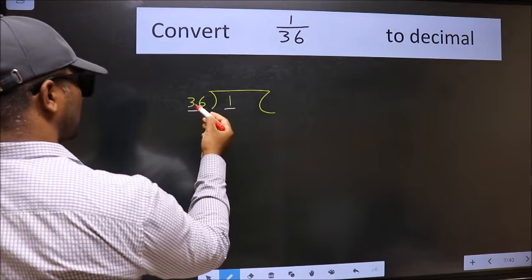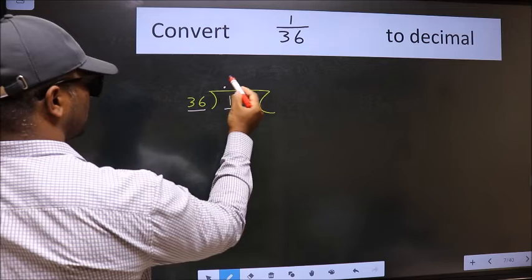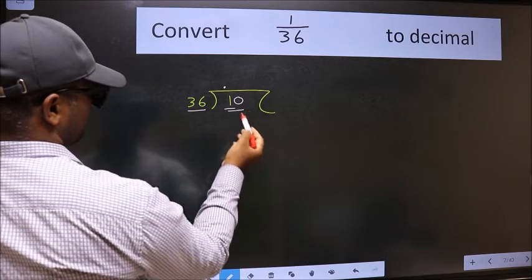1 is smaller than 36, so we should put a dot and take 0. So 10.